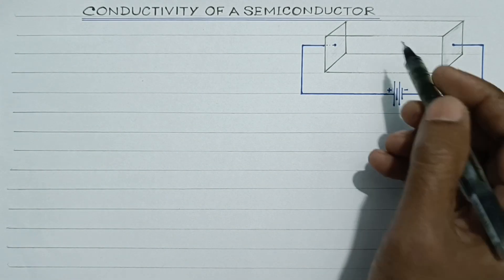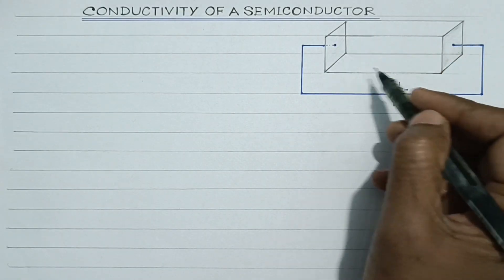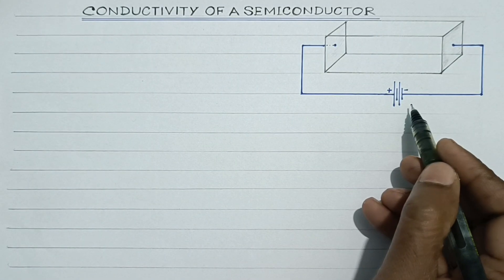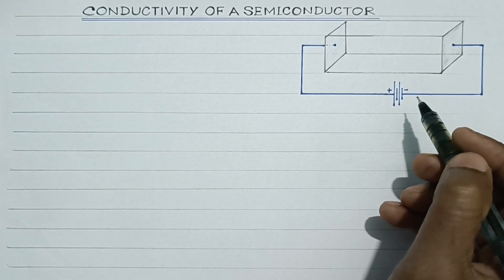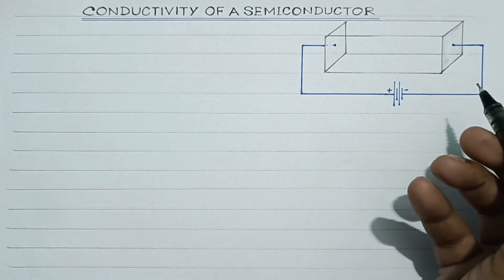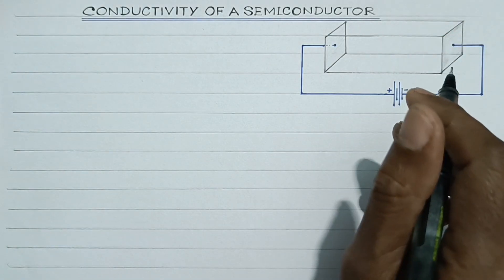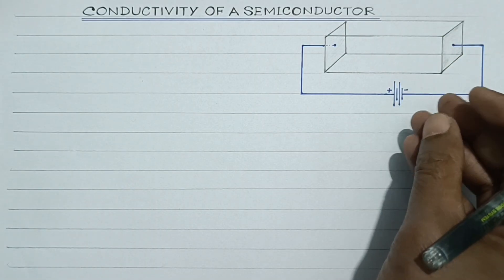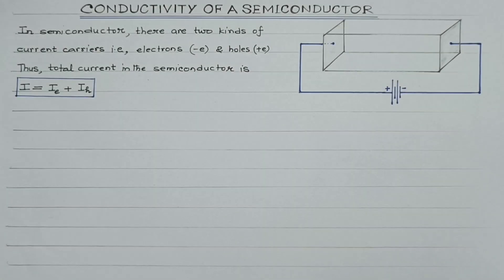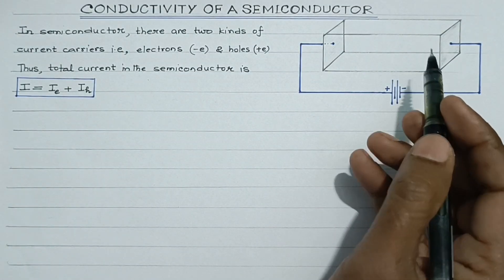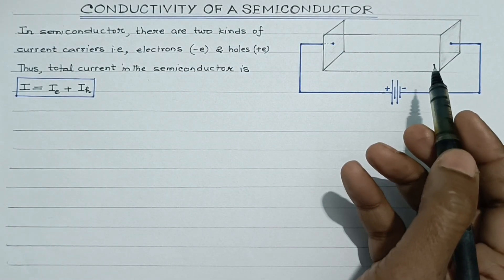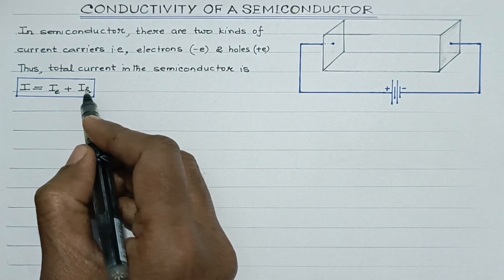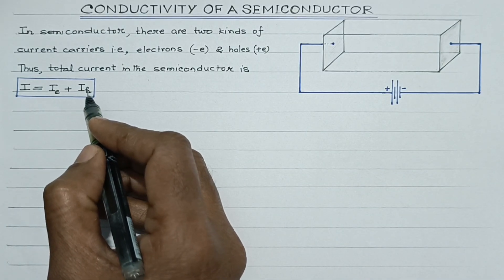Now students, suppose this is a semiconducting block and its two ends are connected to a battery, to a source of EMF. We are aware that in a semiconductor, there are two kinds of charge carriers: electrons, jo ki negative charge carriers hote hain, and holes, which are the positive charge carriers. Toh, bachyo, semiconducting block ke andar dho tarike ke current hota hai — ek current hai due to the electrons, aur doosra current hai due to the holes, which act as positive charge carriers.